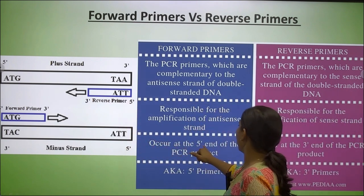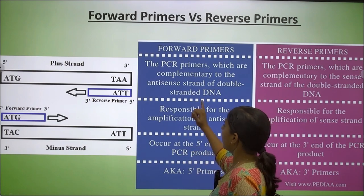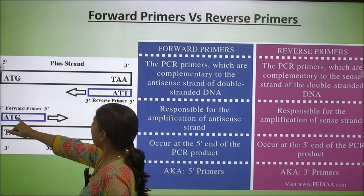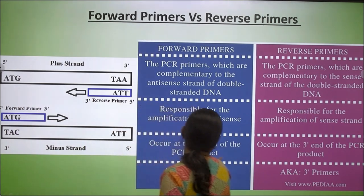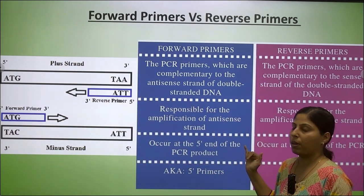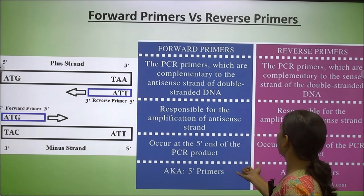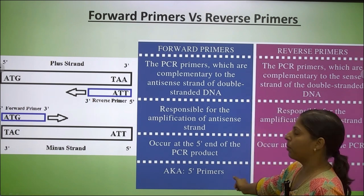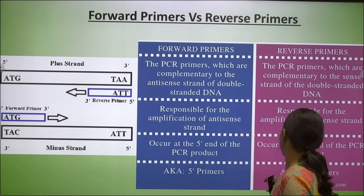Forward primers occur at the 5 prime end of the PCR product, and reverse primers occur at the 3 prime end of the PCR product. Hence forward primers are also called 5 prime primers, and reverse primers are called 3 prime primers.